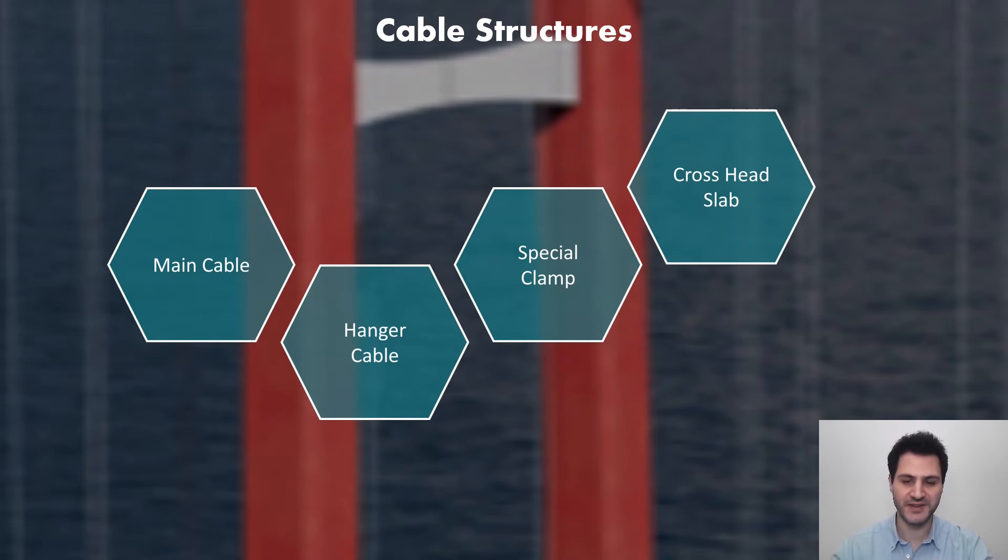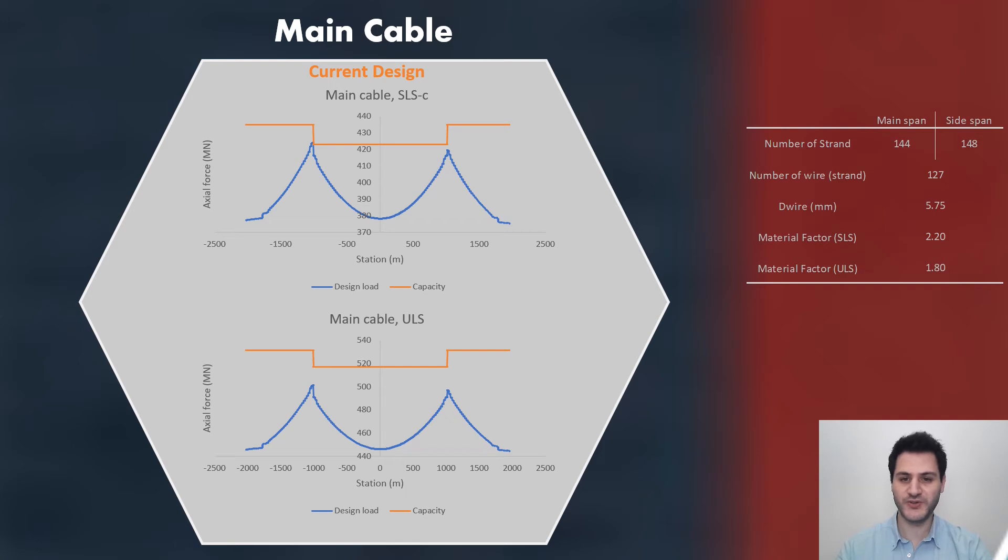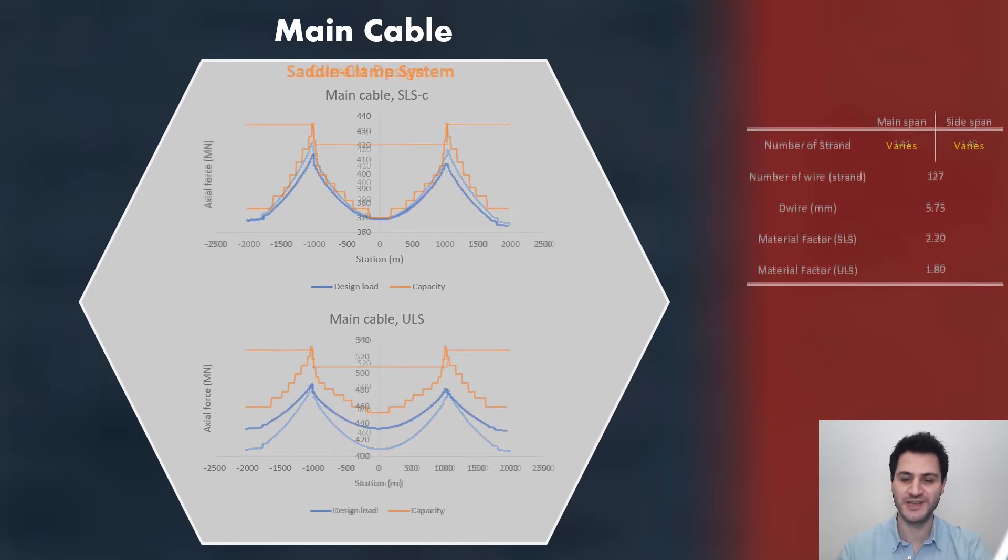Let's move on and discuss how cable structures of the saddle clamp system are verified according to design loads. I will start with main cable. These graphs show design load of SLS and ULS cases taken from Global Analysis Model 1, which is created for the current design. Design capacity is simply calculated by considering total cable area, cable material, and safety factors. As you probably noticed, capacity is constant while design loads change dramatically per span. Therefore, number of strands in the main cable is optimized with saddle clamp system.